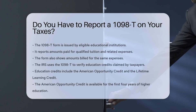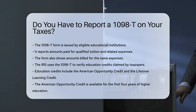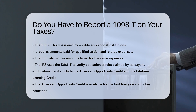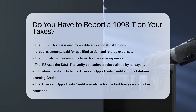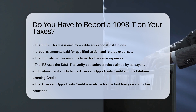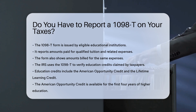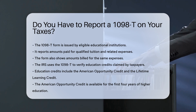The 1098-T form is issued by eligible educational institutions. It reports amounts paid for qualified tuition and related expenses, and also shows amounts billed for the same expenses. The IRS uses the 1098-T to verify education credits claimed by taxpayers.